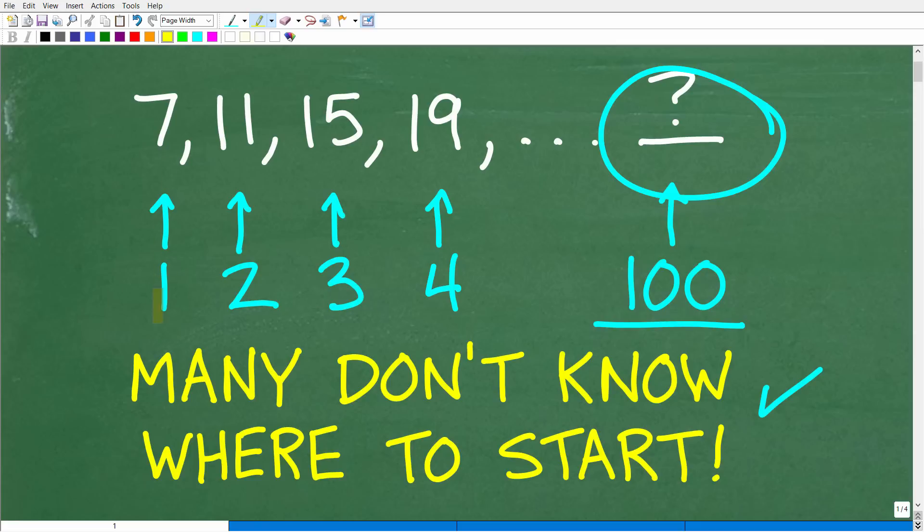So the first term or first number in the sequence is 7. The second is 11. The third term is 15. The fourth is 19. So we have a clear pattern. And what you can do here is just continue this pattern until you figure out what the value of the 100th term is. But that would require a lot of math, and there is a much better way that we can take in order to answer this question.